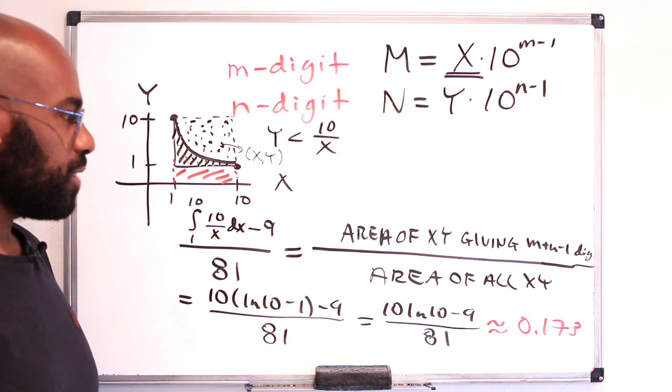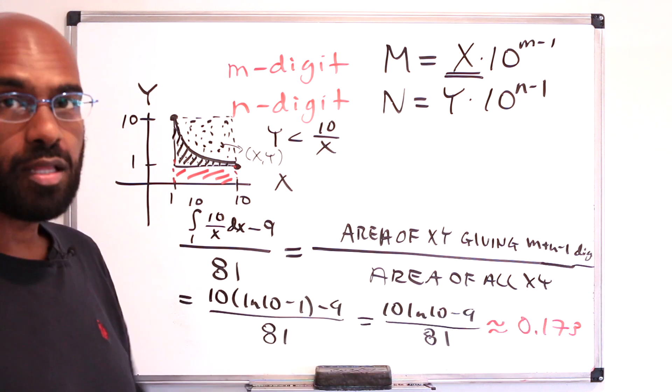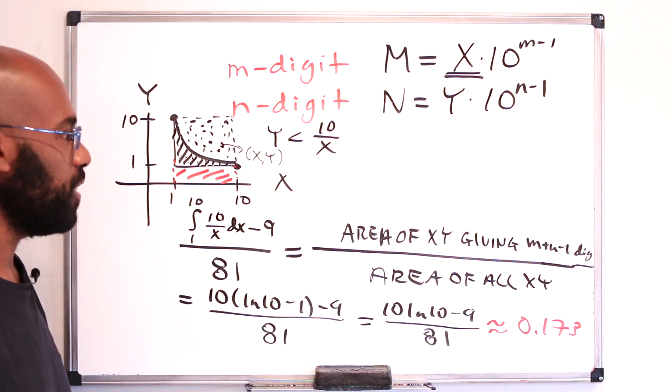This kind of matches our intuition that there are going to be a lot more products that have higher digits than lower digits. But now we have a sense of what the approximate number should be as the number of digits in each m and n get very large.